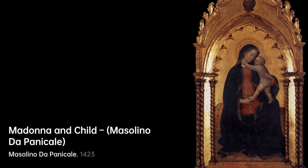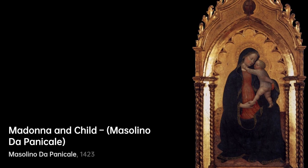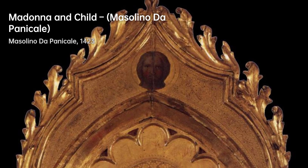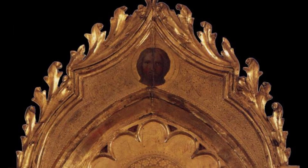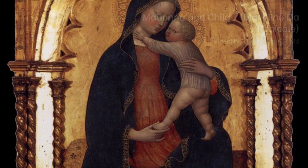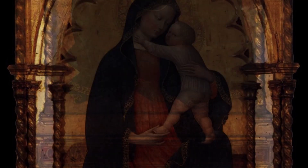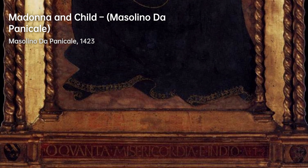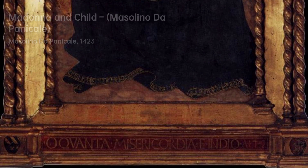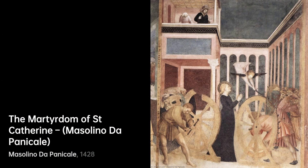Masolino's most famous collaboration was with his younger colleague Masaccio, on the frescoes in the Brancacci Chapel in the Basilica of Santa Maria del Carmine, Florence. These frescoes depict the life of Saint Peter, and they were much admired by fellow artists throughout the 15th century.